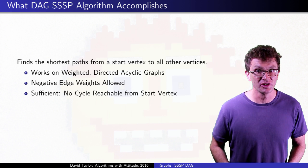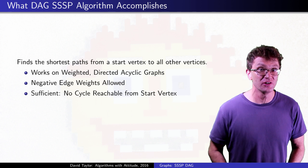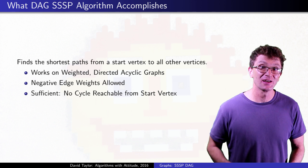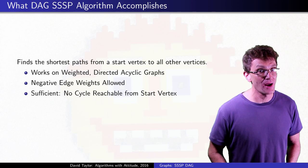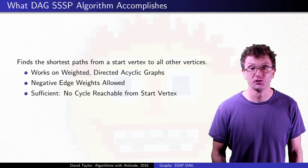This algorithm can find the shortest distance and shortest path tree from any vertex to all other vertices in any directed, acyclic, weighted graph. It runs in time linear in the graph size and can work as long as there are no cycles reachable from the start vertex.